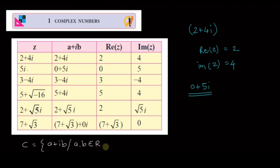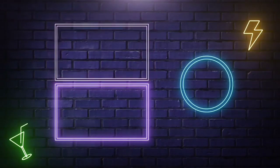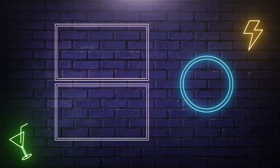Both a and b are real numbers, and i = √(-1). I hope students you liked this video. We are going to make similar videos, so please subscribe to our channel. Thank you very much.